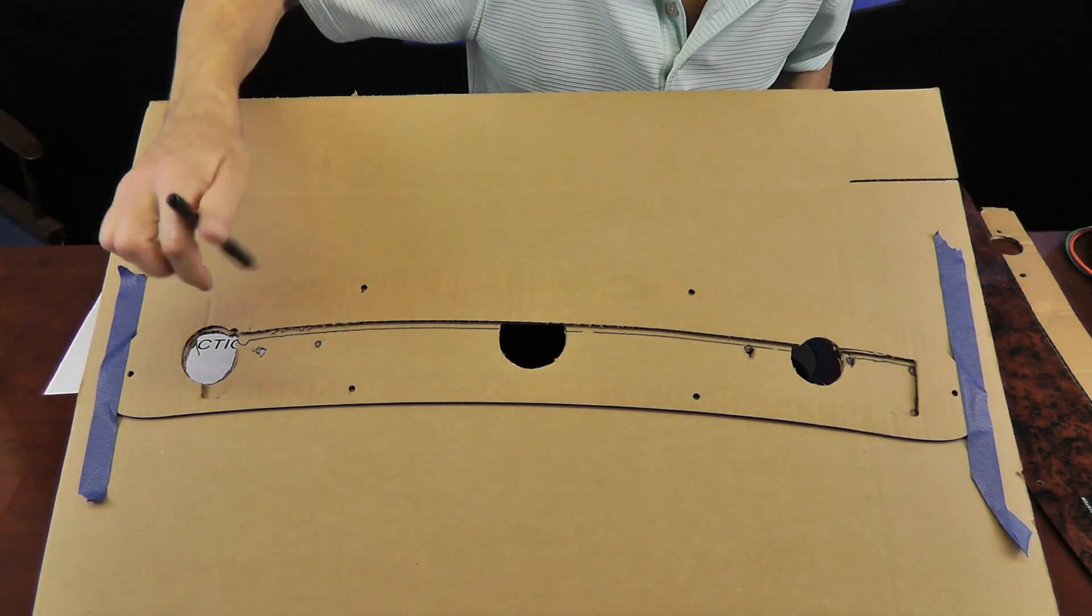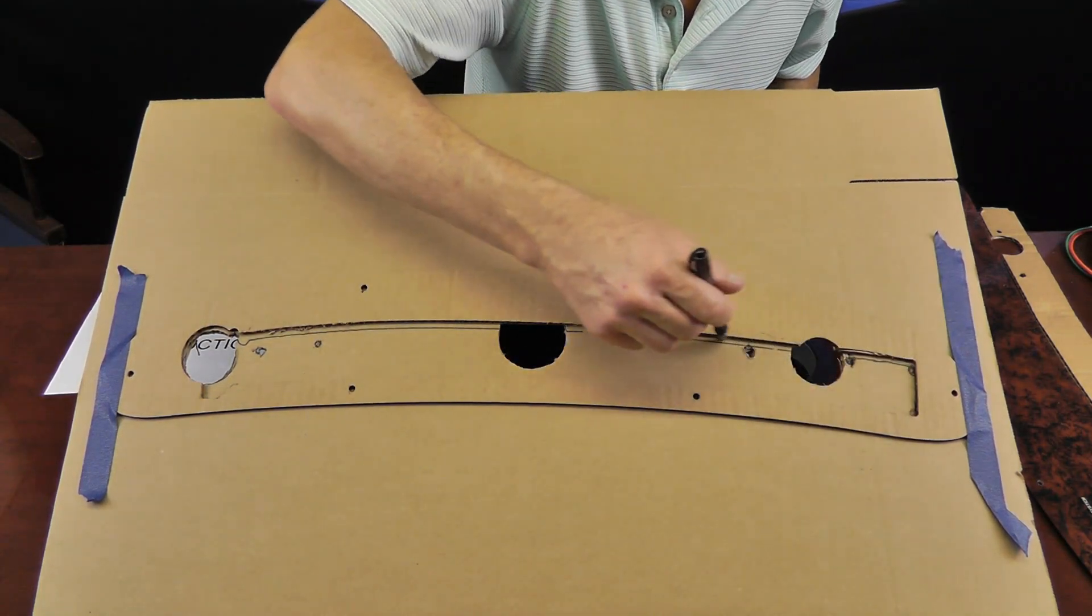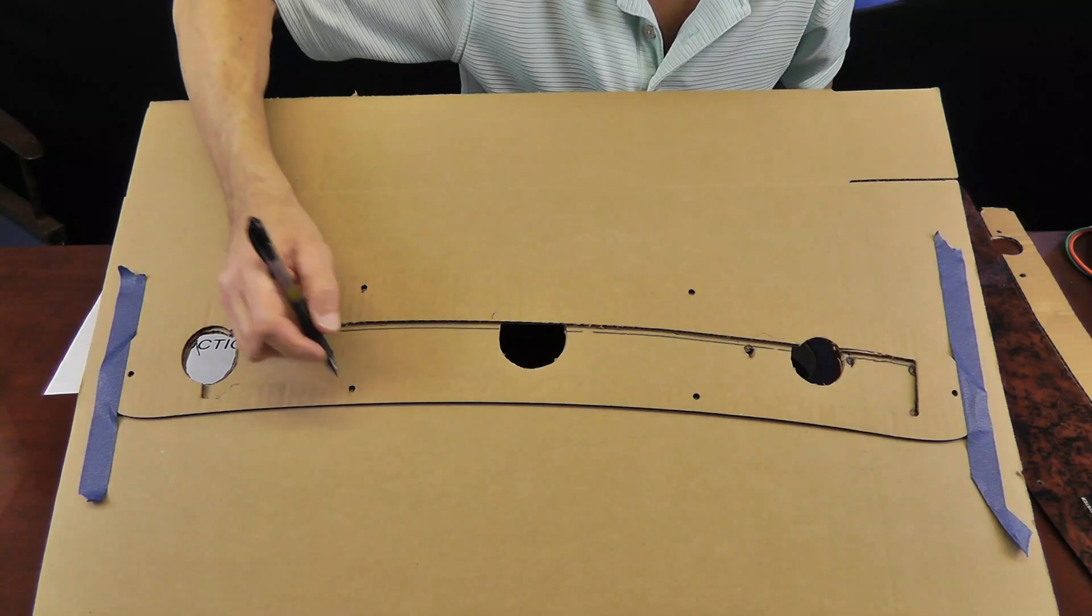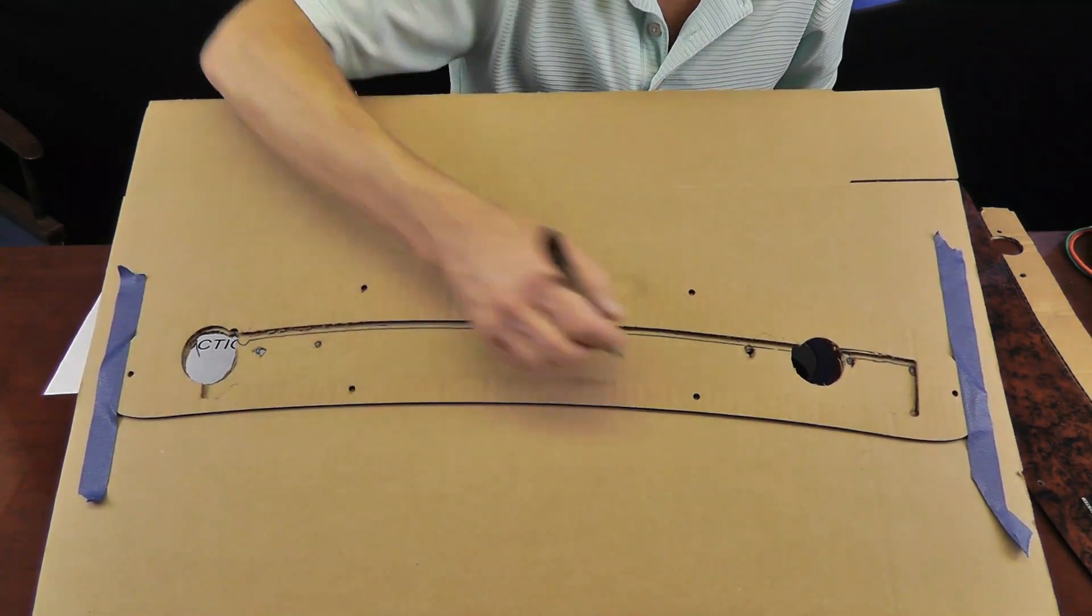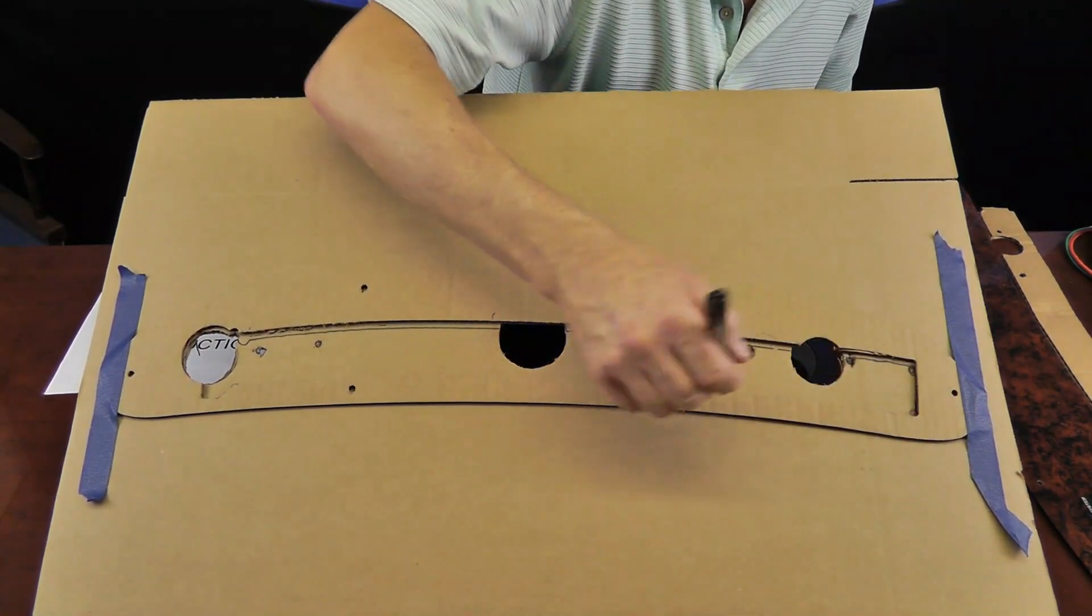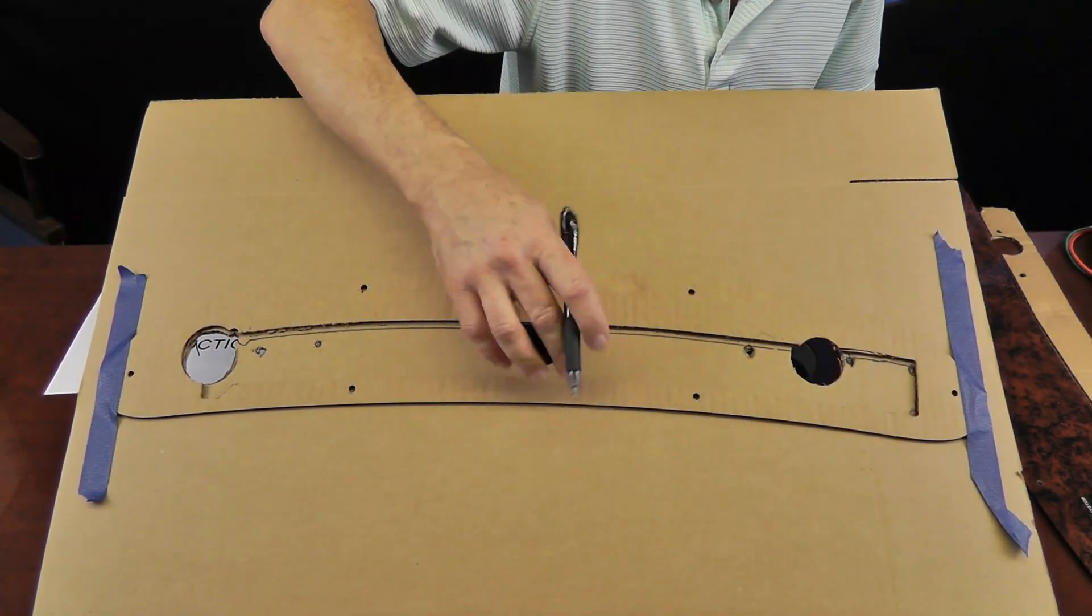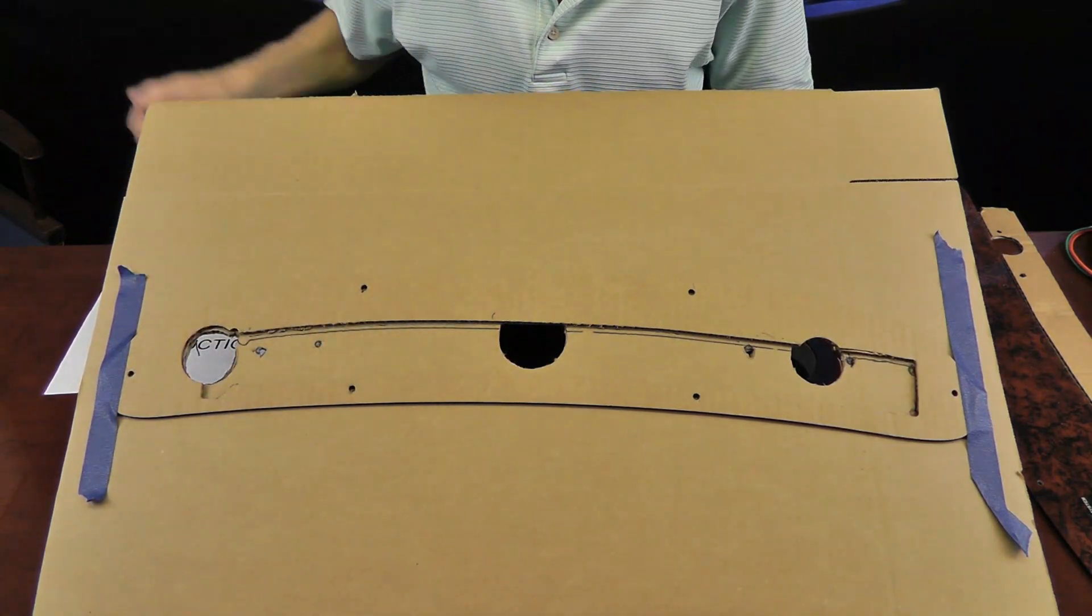Take a sharpie and mark inside your template line. And then also remember to mark your screw hole positions. You can go ahead and drill your mounting holes right through the template. Just try not to destroy the template, just in case you have to put it back on to clear up some lines.